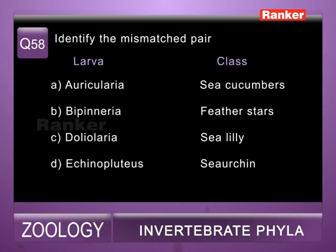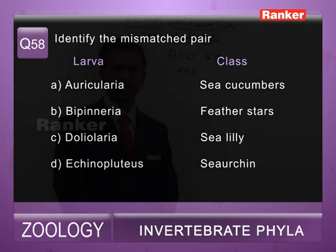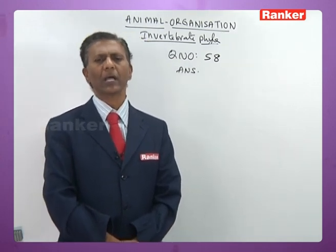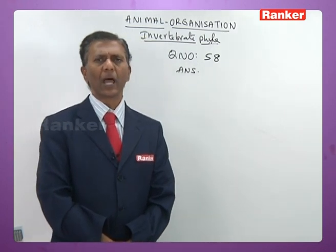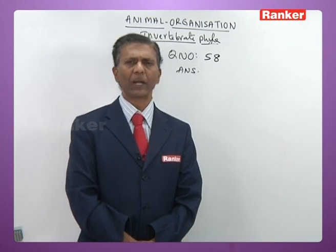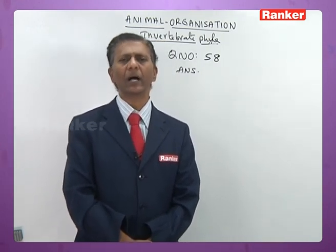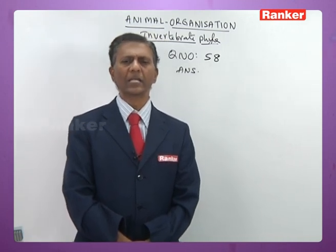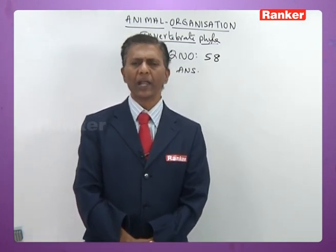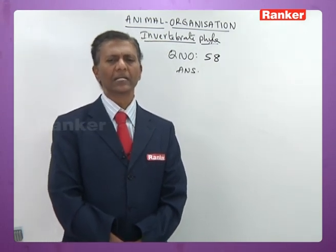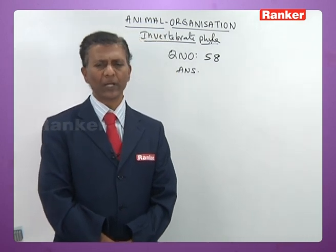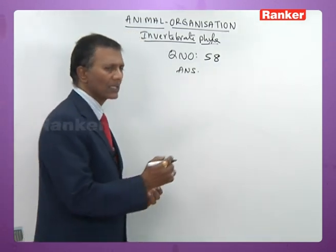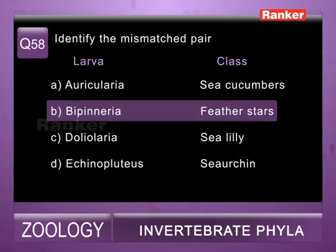Question fifty-eight: identify the mismatched pair of larva and class — a) auricularia: sea cucumbers/Holothuroidea (correct), b) bipinnaria: feather stars (wrong — bipinnaria is the larva of Asteroidea/starfish, not feather stars), c) doliolaria: sea lilies/Crinoidea (correct), d) echinopluteus: sea urchins/Echinoidea (correct). So fifty-eighth question correct answer is b.